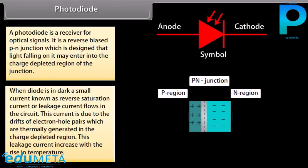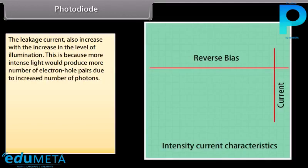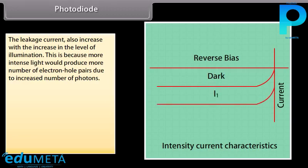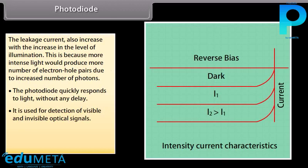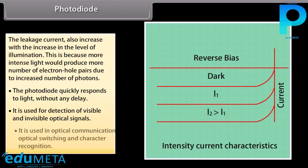This leakage current also increases with the increase in the level of illumination, because more intense light produces more electron-hole pairs due to an increased number of photons. The photodiode quickly responds to light without any delay. It is used for detection of visible and invisible optical signals, in optical communication, optical switching, and character recognition.